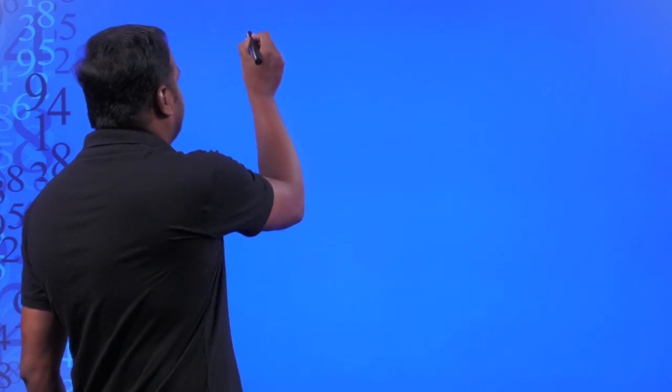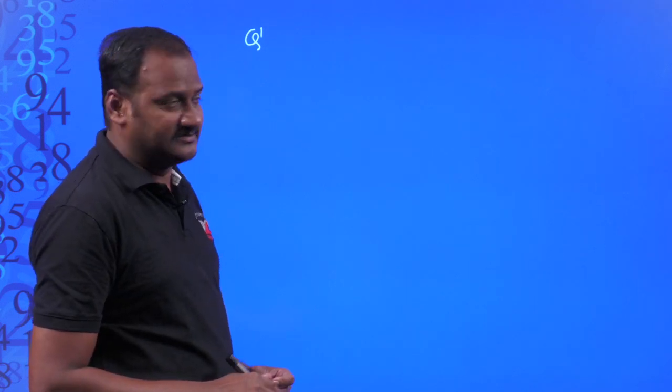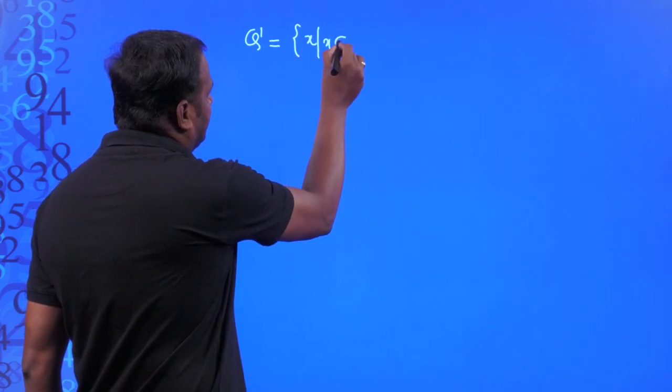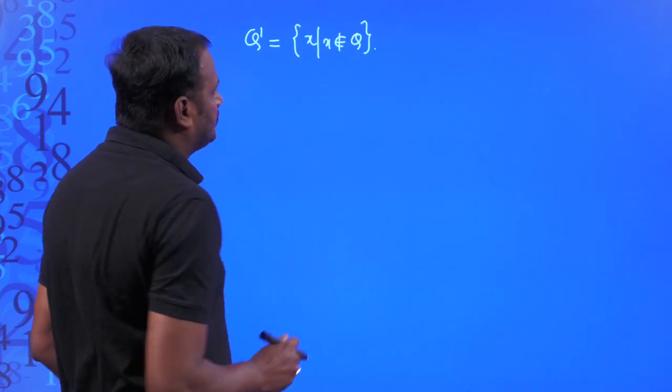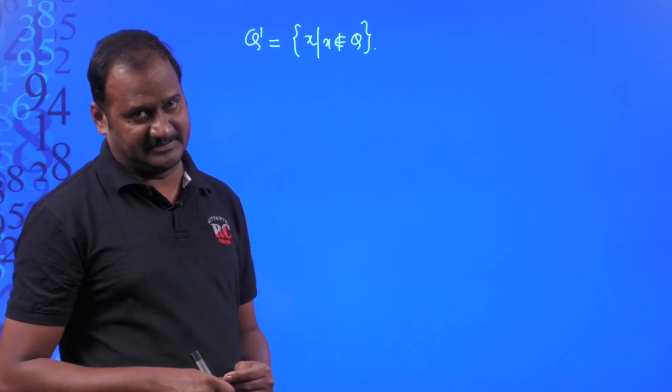Today we are going to discuss about the next concept: irrational numbers. A very important concept related to irrational numbers is about surds. According to the definition, a number which is not rational is said to be an irrational number. Q dash (Q') is the representation of irrational numbers, which is the set containing x such that x does not belong to Q. Q is the set of rational numbers — any number which is not rational is said to be an irrational number.